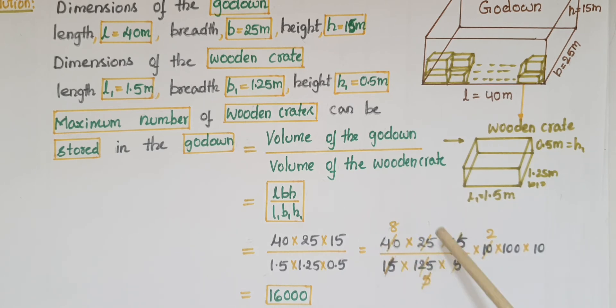Now you can cancel 15 and 15. Twenty-five ones are 25, 5s are 125. Five ones are 5, 8s are 40. Five ones are 5, 2s are 10. Eight times 2 is 16, 16 times 100 is 1,600, times 10 is 16,000.